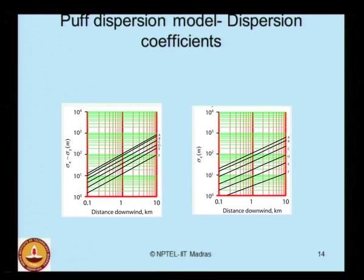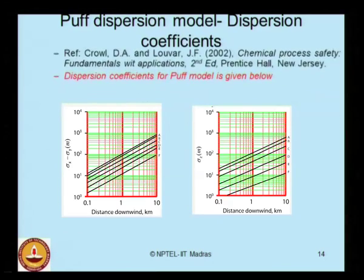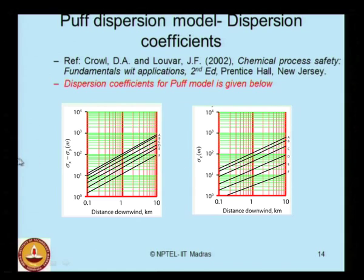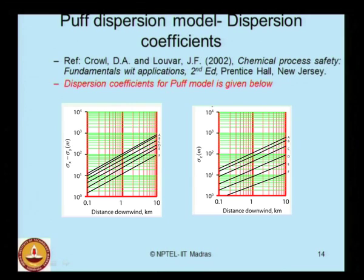Similarly, for a puff model, the dispersion coefficients can be obtained from two given figures. The downwind distance is plotted on the x-axis in kilometers, while the y-axis gives sigma y or sigma z in meters for Pasquill stability classes A through D.